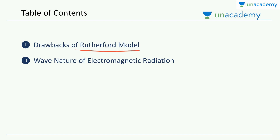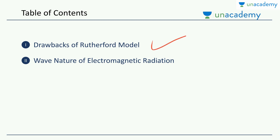There were some experiments performed where the Rutherford model fails. And then finally, we'll look at one of the concepts which is the wave nature of electromagnetic radiations. After the first section is complete, we'll be talking about a few of the developments which led to the development of the Niels Bohr's model. This is the first concept among all the concepts which will be used to describe the Niels Bohr's model.